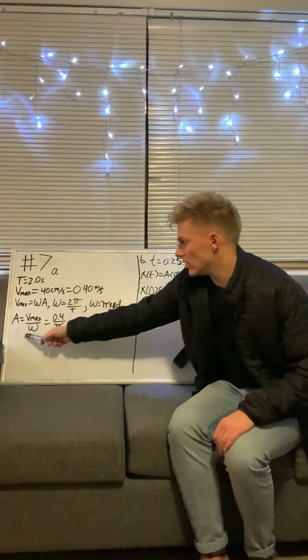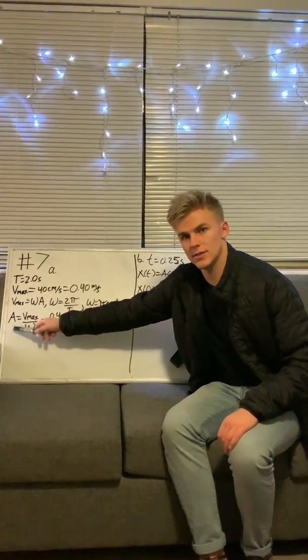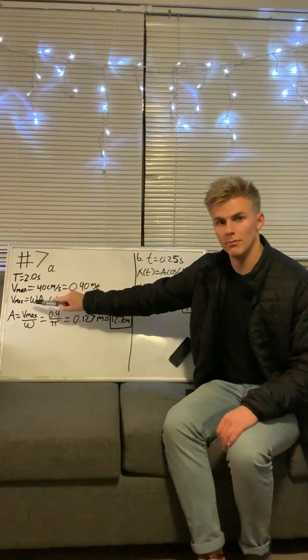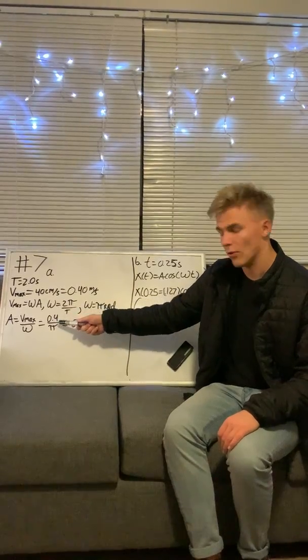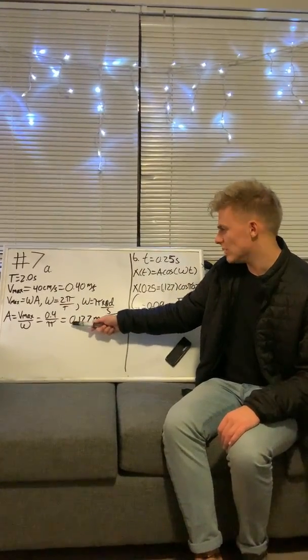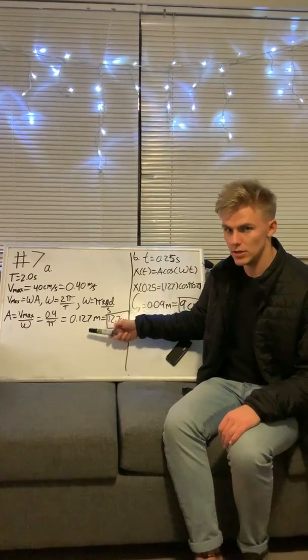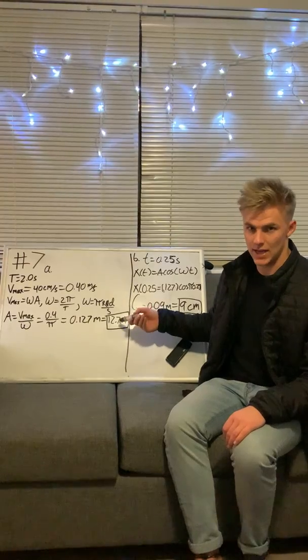Then we can rearrange the equation for amplitude and say that amplitude equals V max over omega. When we plug in our numbers, 0.4 divided by π, we get approximately 0.127 meters, which equals 12.7 centimeters—the answer for Part A.